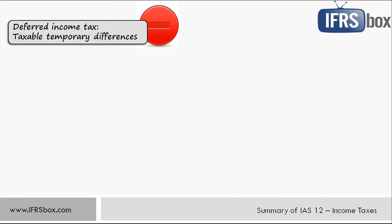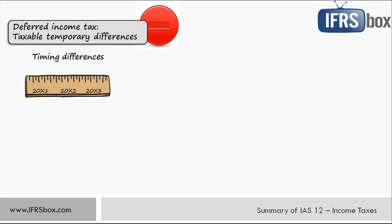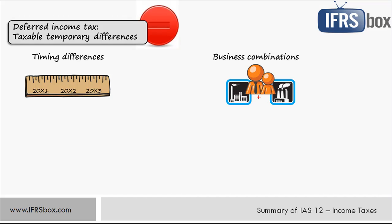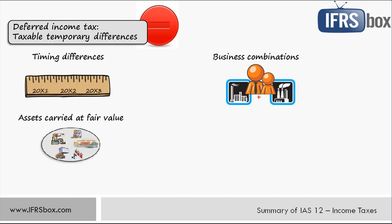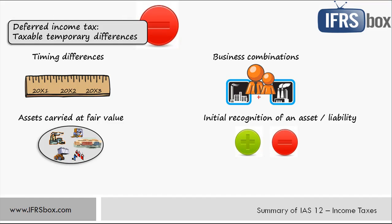Let's look at some examples of taxable temporary differences. A large group represents timing differences — called timing because the recognition of a certain item in the financial statements occurs at a different time than its recognition in the tax return. A typical example is interest revenue included in accounting when earned but taxed when cash is received. Taxable temporary differences might also arise at business combinations when identifiable assets and liabilities are revalued upwards to fair value at the acquisition date but no adjustment is made for tax purposes. The same situation may happen when an entity applies a revaluation policy for assets in its individual financial statements.